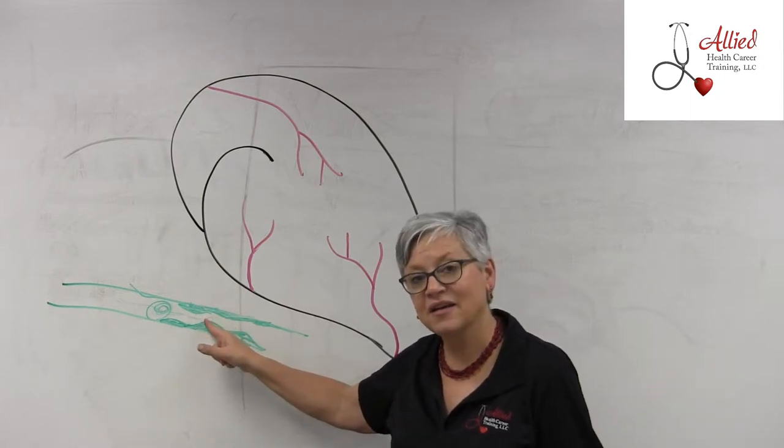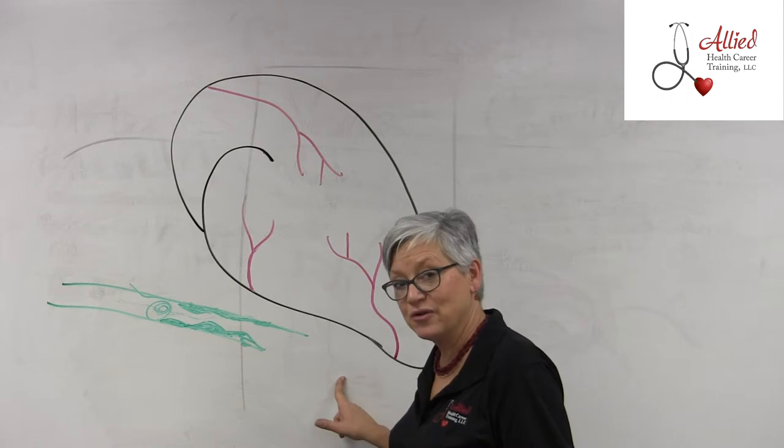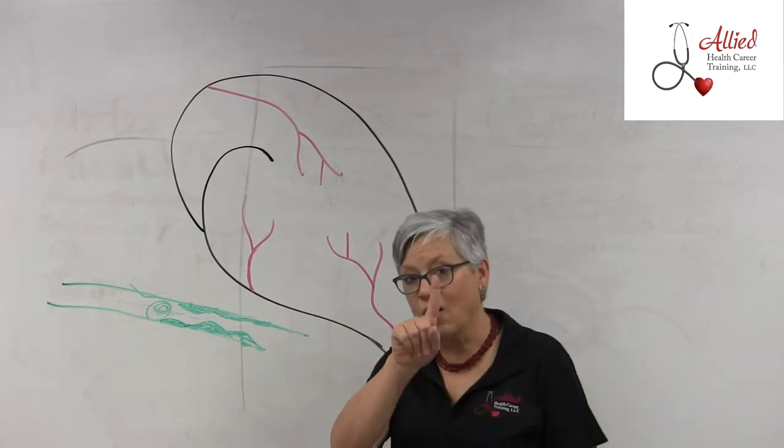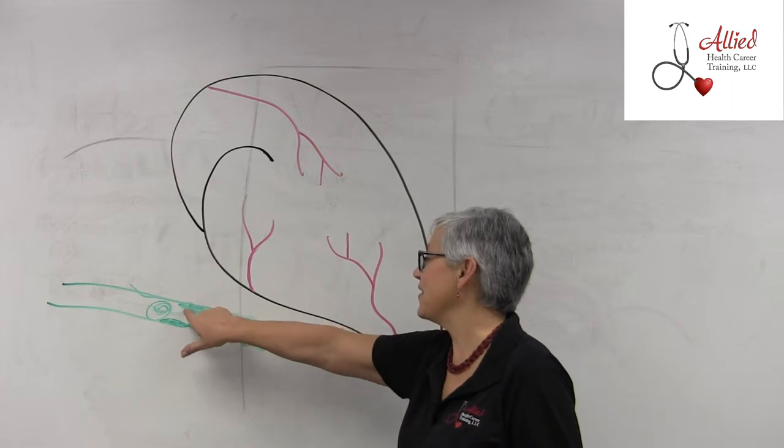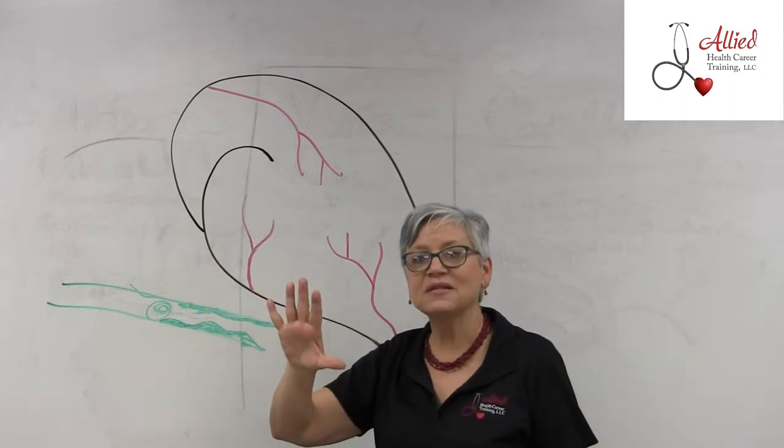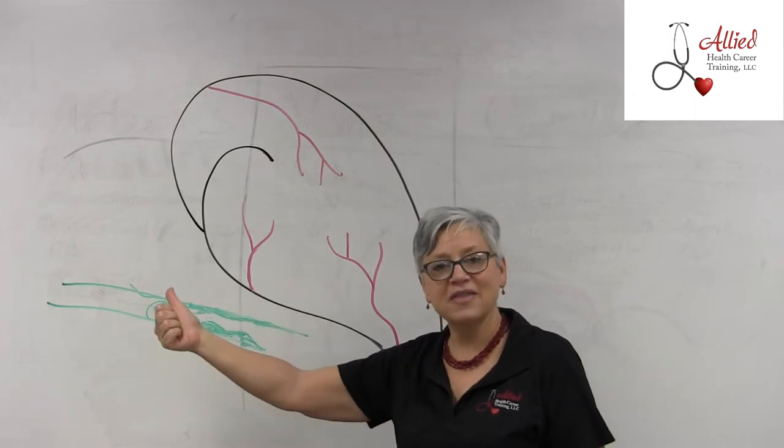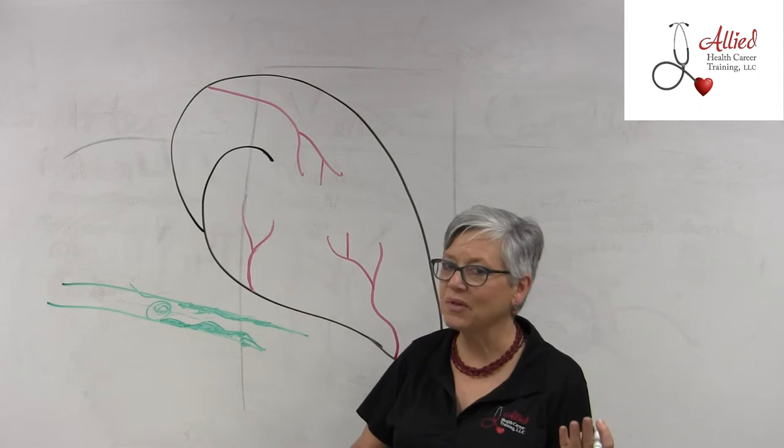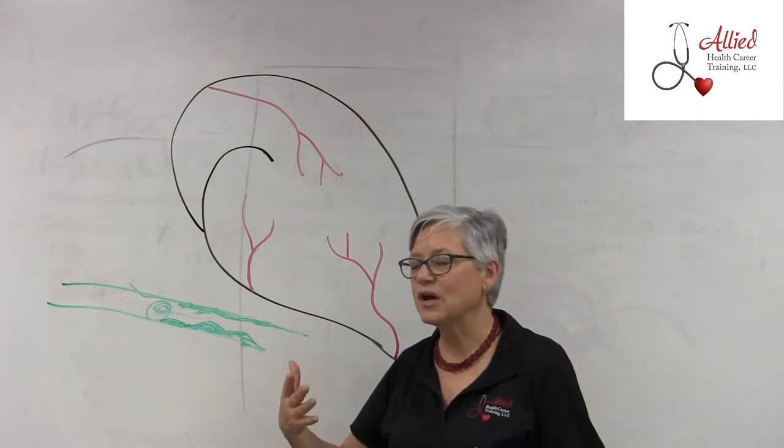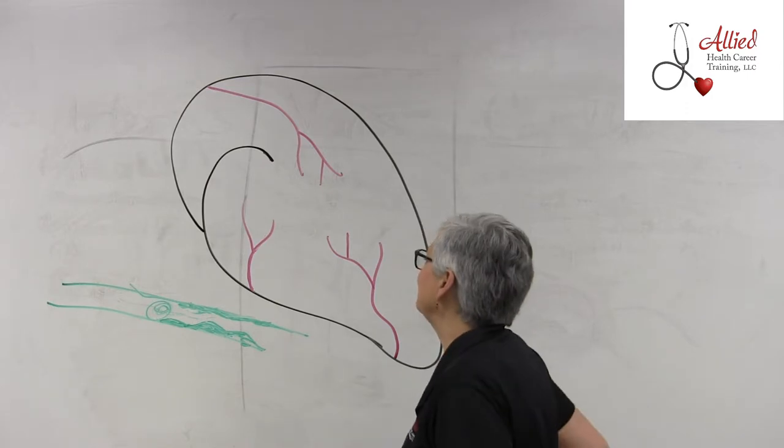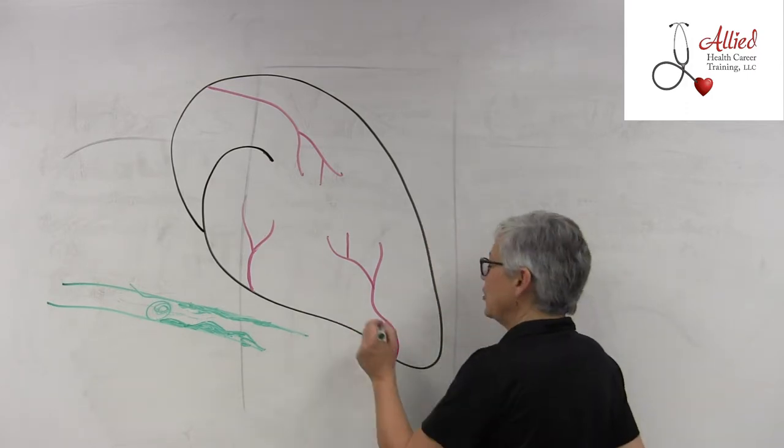And can you see how if a clot got formed and it came through here and got stuck, it can't get downstream to feed the rest of the tissues? Or perhaps a piece of this comes off and you have an embolus, you have a chunk of fat that comes off and gets stuck in there. Either way, whether it's a blood clot, thrombosis, or embolus, the same thing happens.